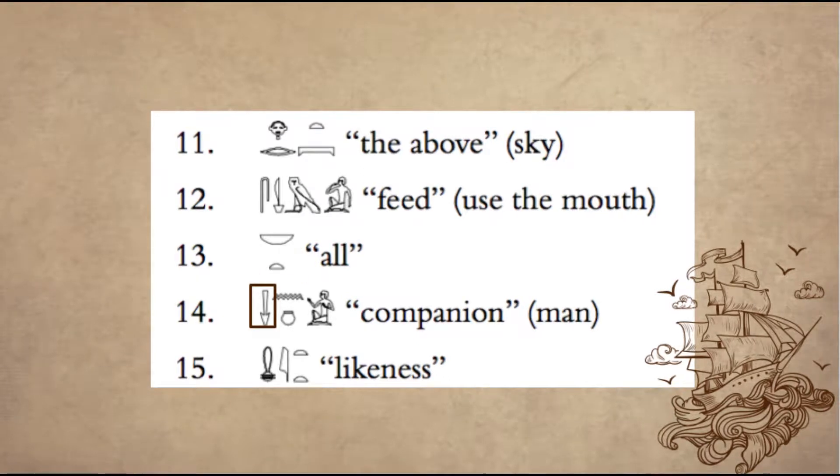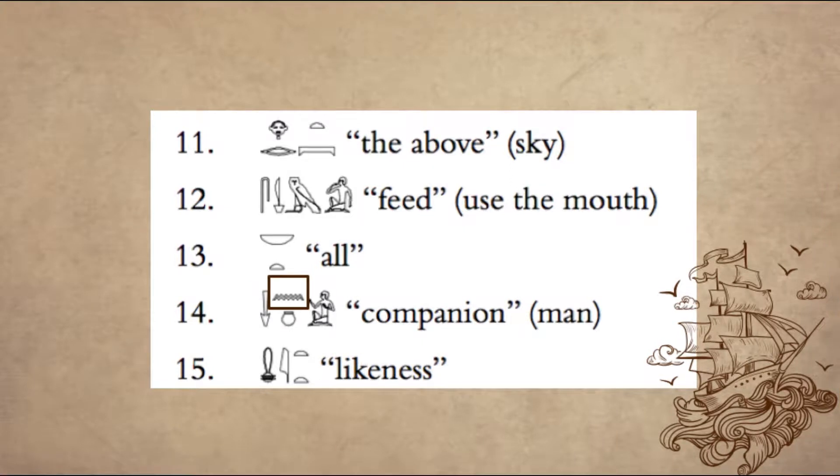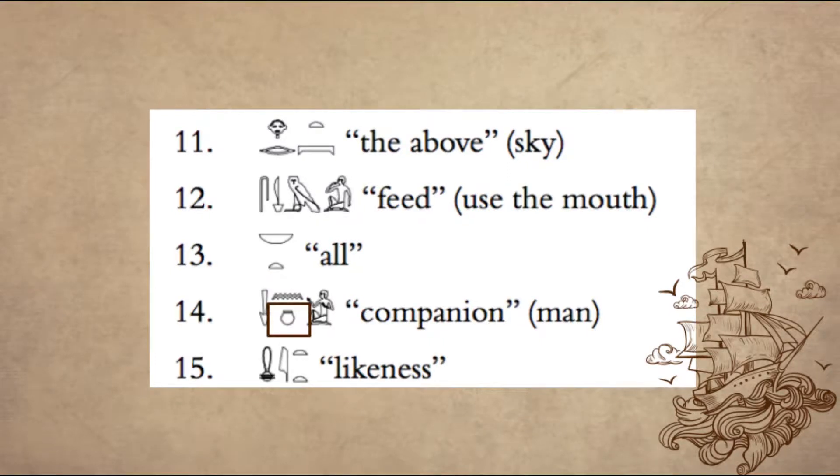The first hieroglyph in the shape of an arrow is read sen, then we have the letter n, and then we have the little jar which is read nu. Altogether, senu. It means companion.